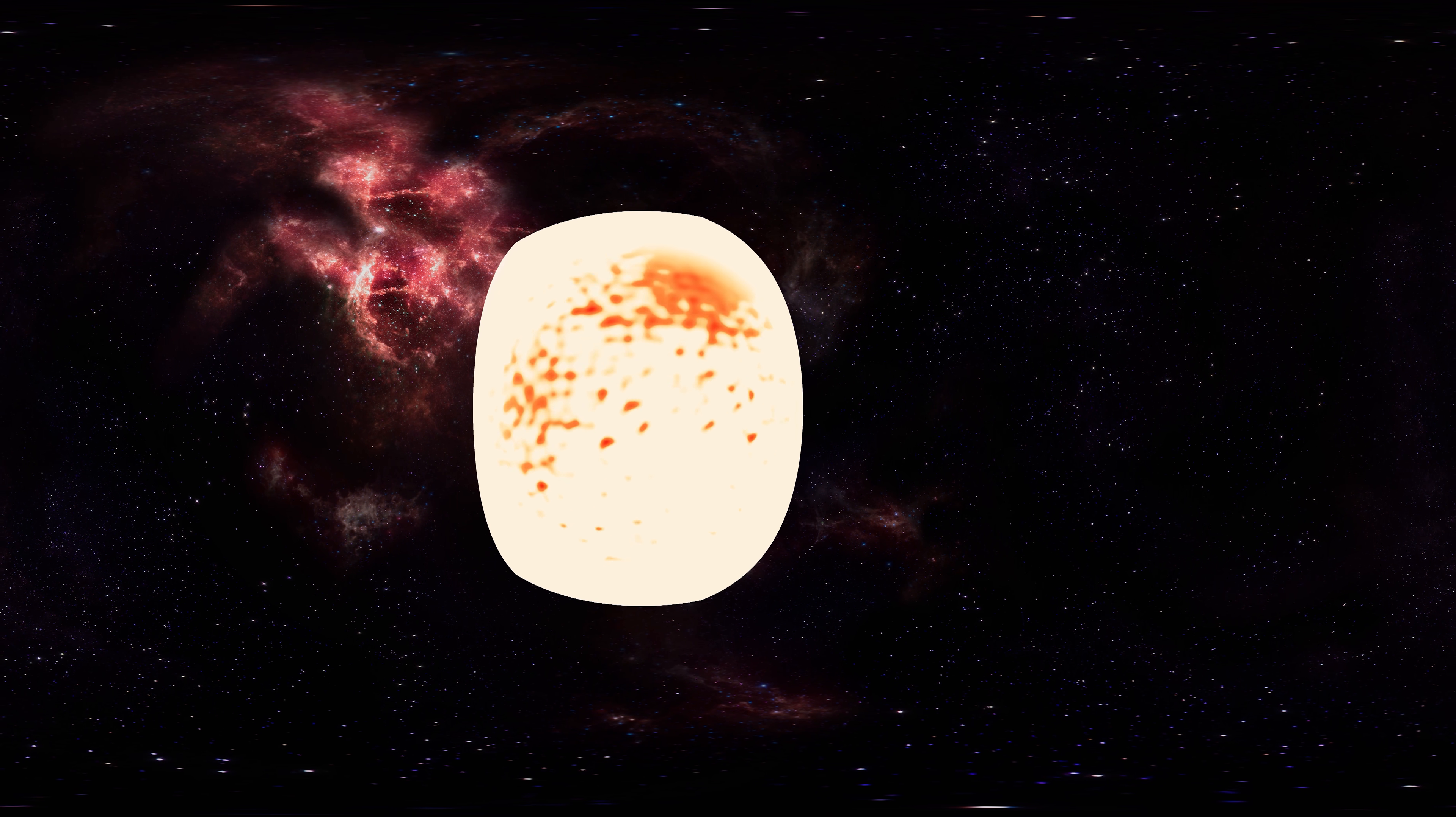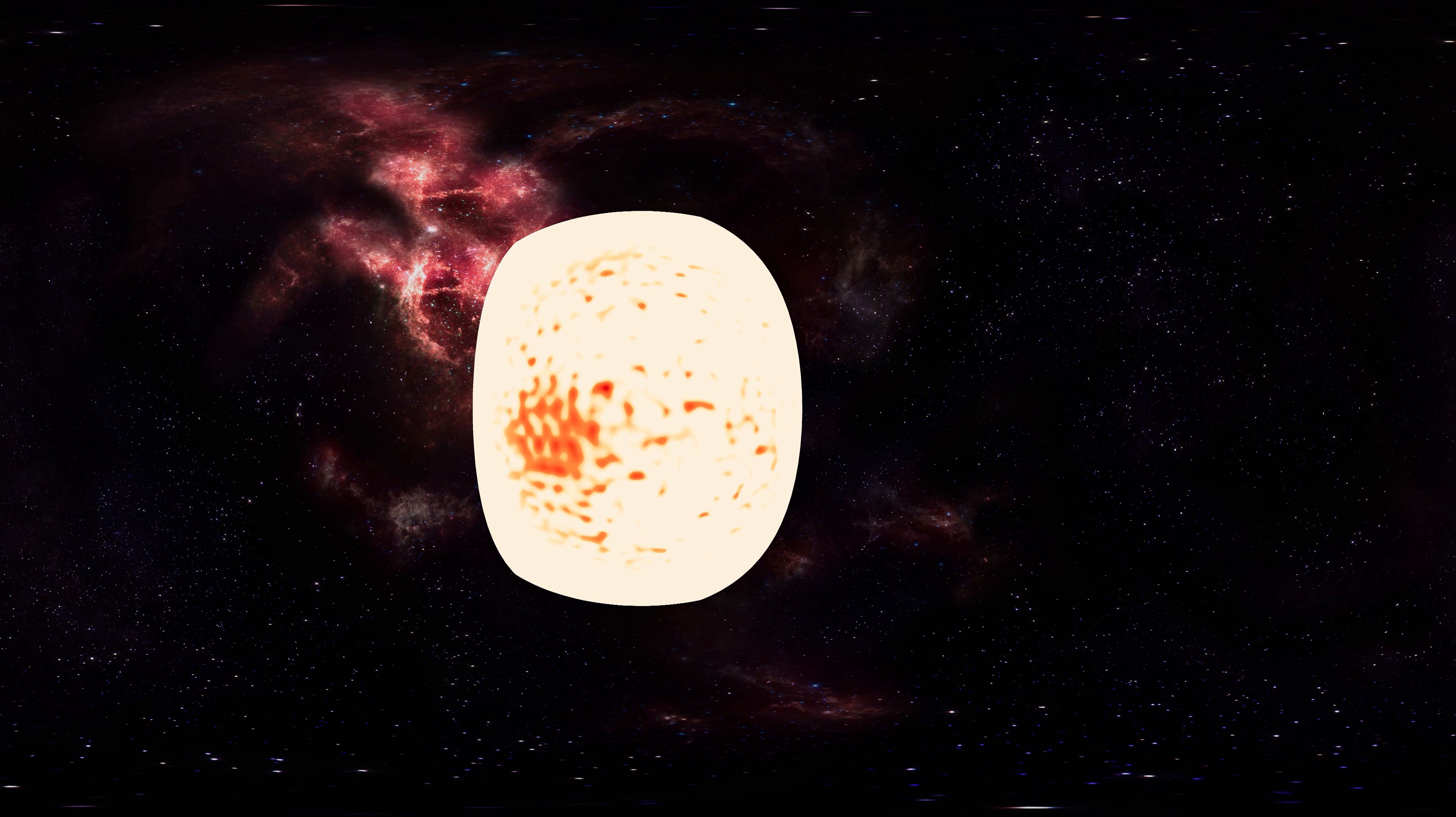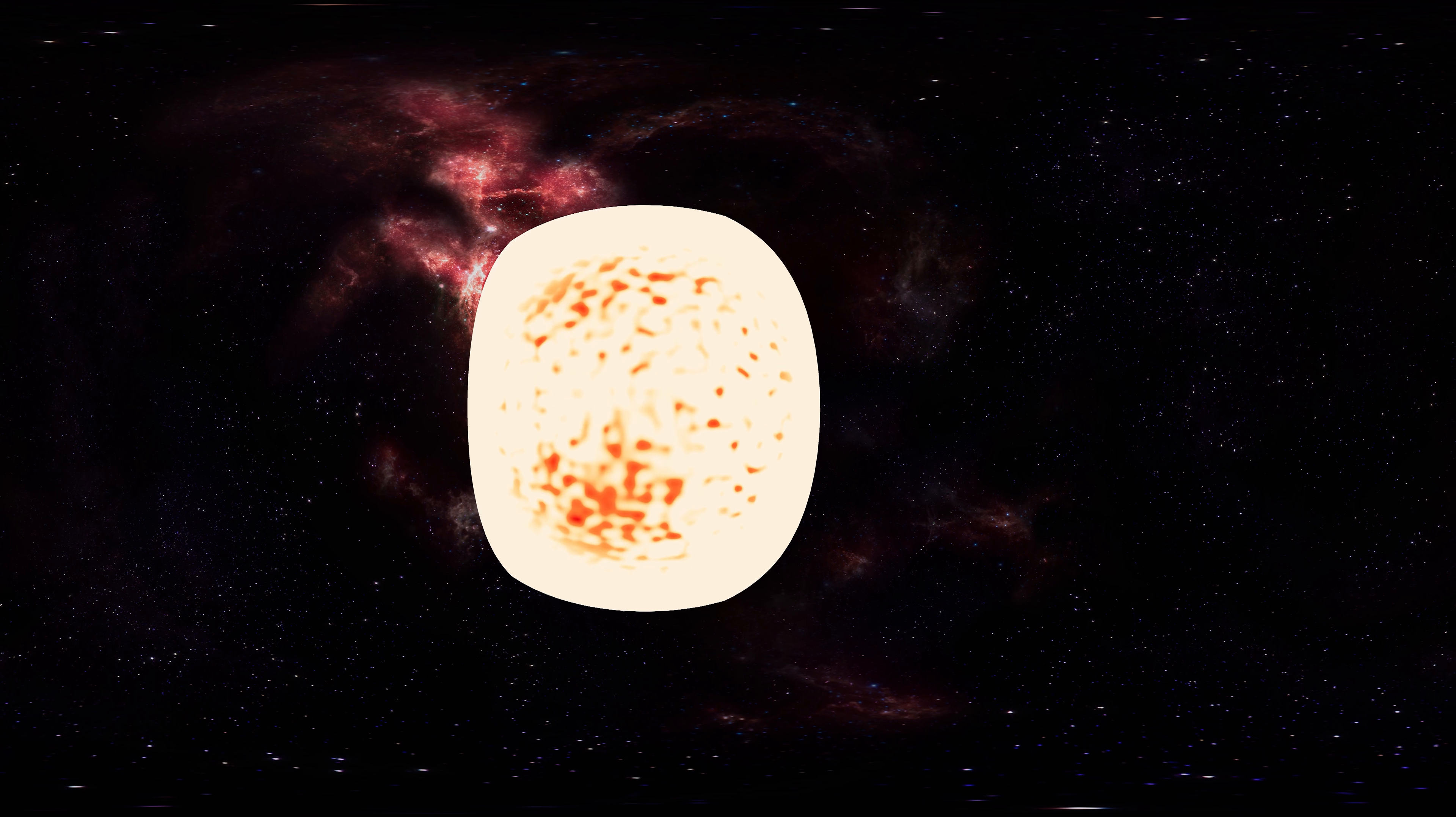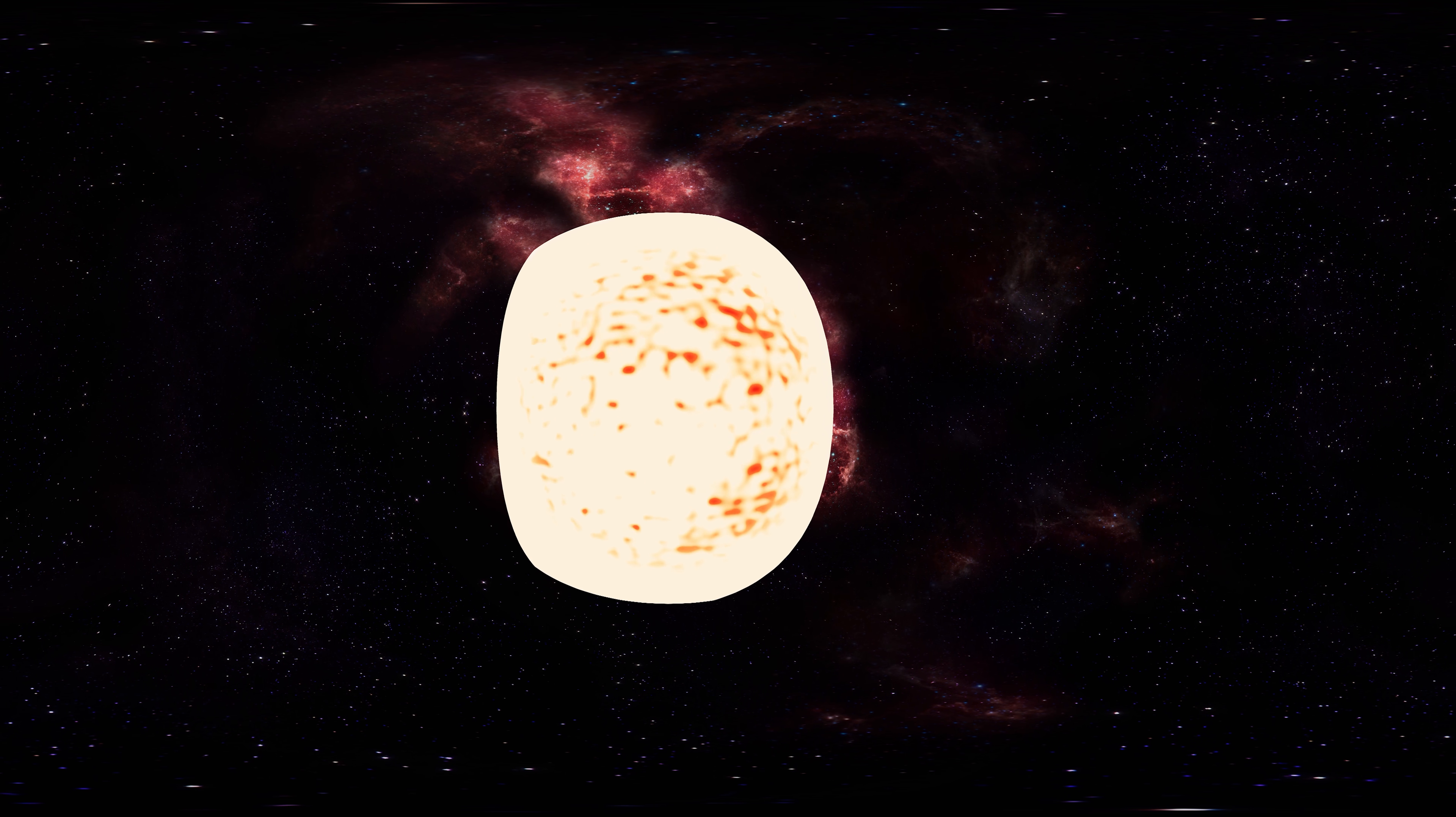The hydrogen and most of the helium in the Sun were produced by Big Bang nucleosynthesis in the first 20 minutes of the universe. The heavier elements were produced by previous generations of stars before the Sun formed, and spread into the interstellar medium during the final stages of stellar life and by events such as supernovae.